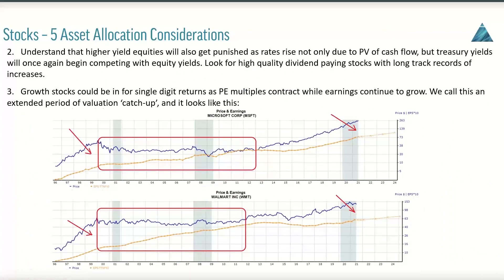Point number two for stocks: higher yield equities will also get punished — the higher the yield, the more they behave like bonds. Look at your Verizons and others without a lot of growth; those cash flows being discounted back will get punished. However, look for high-quality dividend-paying stocks with long track records of increases that can help offset inflation. At some point, treasury yields are going to be competing with equity yields, and that's where valuations for higher-yielding stocks will struggle if they don't have the growth to offset that.